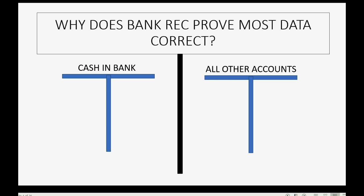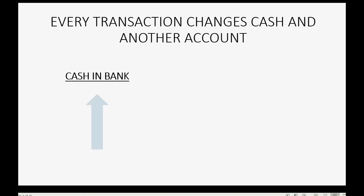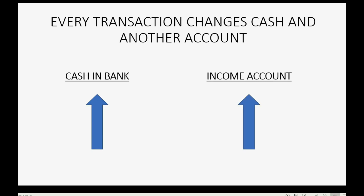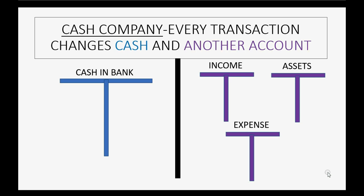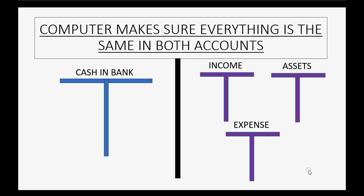So why does bank reconciliation prove most data is correct in all the rest of the accounts in QuickBooks Online? We know that every transaction changes cash and another account. For example, if cash increases, usually there's an income account that's also increasing with it. And if cash decreases, then usually there's an expense account that records an increase for whatever reason decreased the bank account, like if we paid for delivery or if we paid for repair.